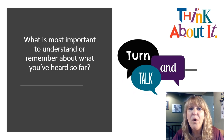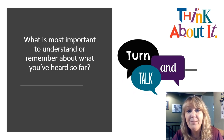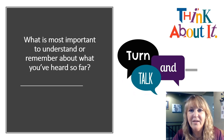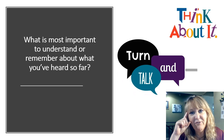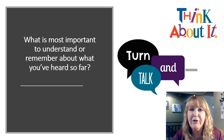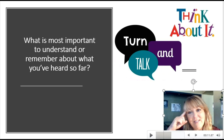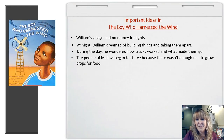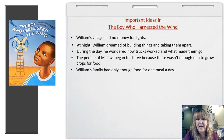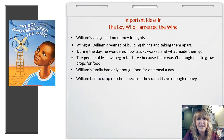Let's spend some time thinking about what are the most important things to understand and remember about this section of the text that we just read. I want you to think for a moment to yourself, and then go ahead and share with your turn and talk partner. Maybe you said something about William's family not having enough food and they could only eat once a day. You may have also talked about the fact that William had to drop out of school because they didn't have enough money, and he was really sad about that as he watched the other students go off to school.